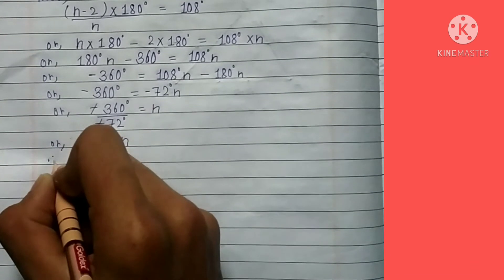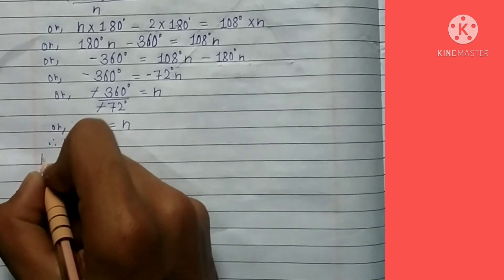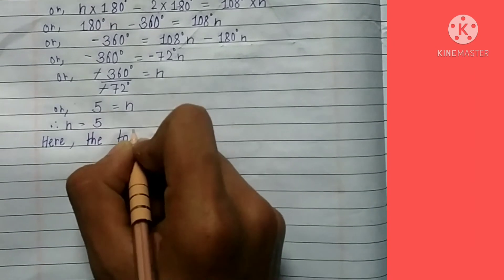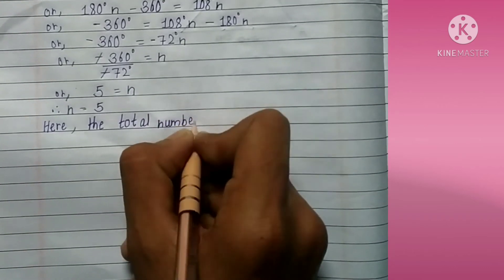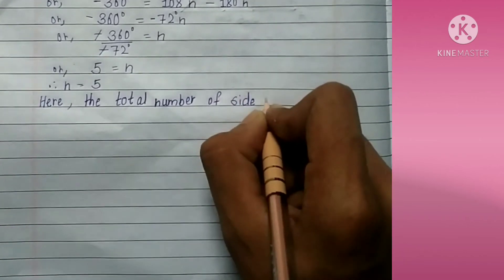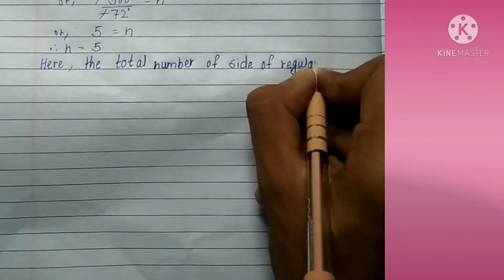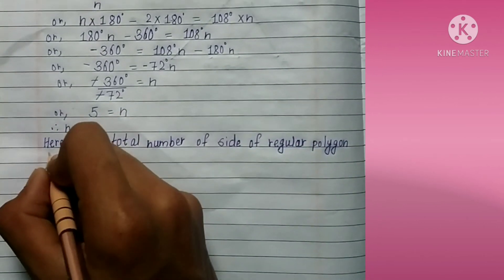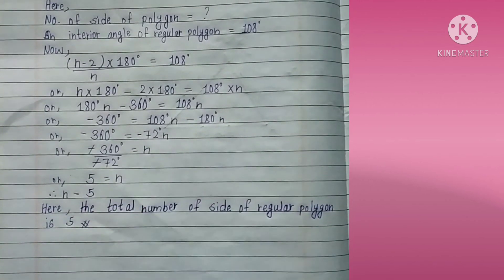Here we are going to divide by minus 72 — we cancel the negatives — and we get the result: 5 equals n, therefore n equals 5. Therefore, the total number of sides of a regular polygon having a 108 degree interior angle is 5, which is also called a pentagon. Thank you for watching.